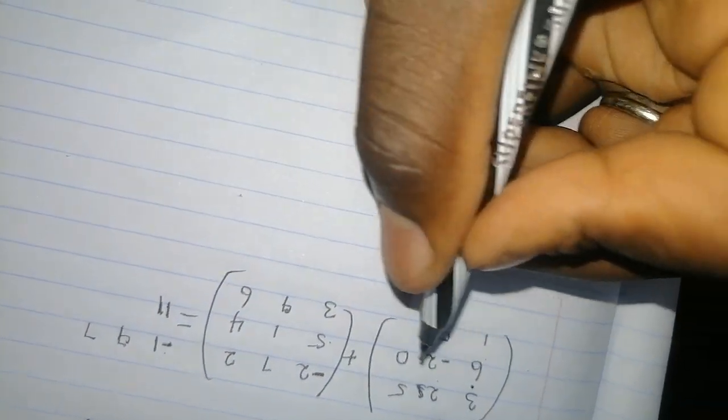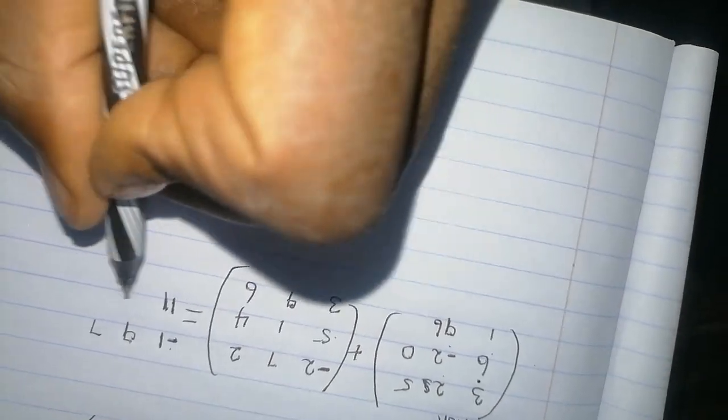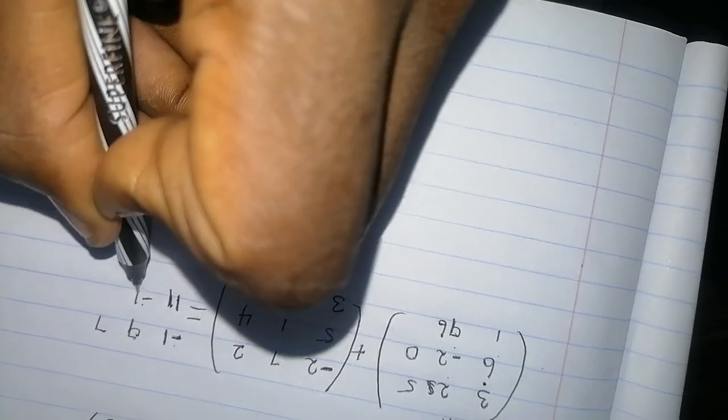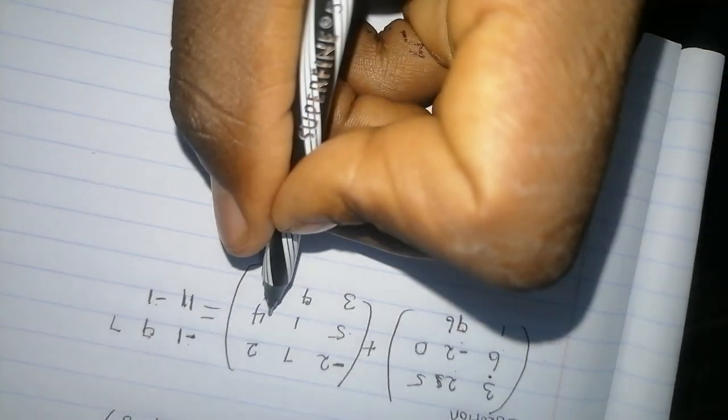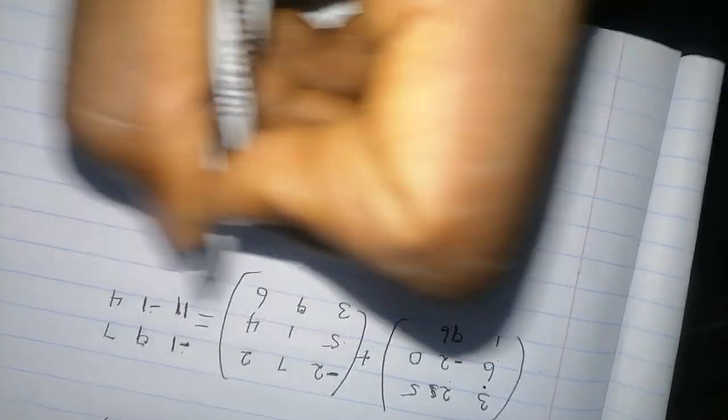Negative 2 plus 1, which is negative 1. 0, you add 4, which is 4. 1 plus 3, which is 4.